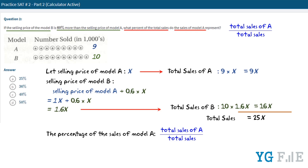We know that the total sales of model A is 9X and the total sales is 25X. So it is equal to 9X over 25X, which equals 0.36. Since we want to find the percentage, we multiply 0.36 by 100, which equals 36%. So the percentage of sales of model A is 36%, and the answer is B.